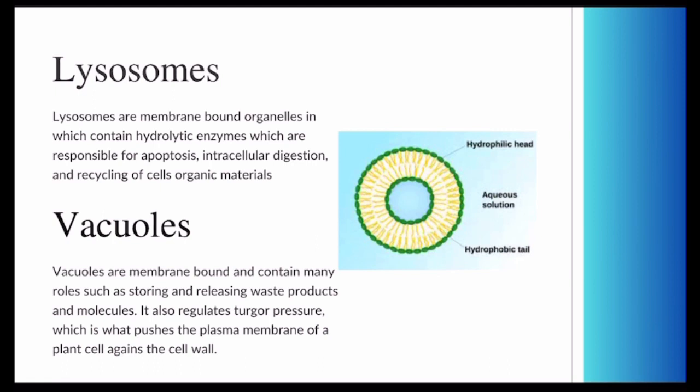Lysosomes are membrane-bound organelles. They contain hydrolytic enzymes. Basically, lysosomes are responsible for apoptosis, intracellular digestion, and recycling of cells' organic materials. Vacuoles, which is shown here, are basically responsible for storing and releasing waste products. They also assist in turgor pressure, which is what pushes the plasma membrane of the plant's cell against the cell wall.